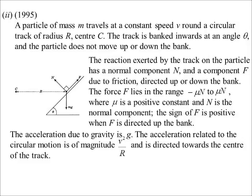This problem takes friction into account. Whether it's up or down the bank depends on whether we're speeding up or slowing down. If we're speeding up, we move up the bank, so friction goes down the bank. If we're slowing down, friction goes up the bank. That's why it's either −μN or +μN depending on our motion.